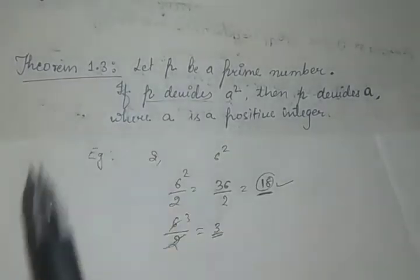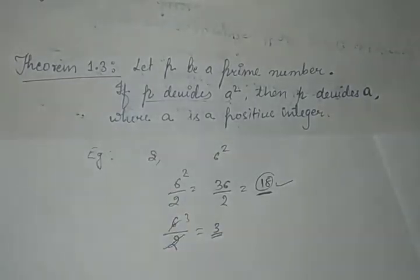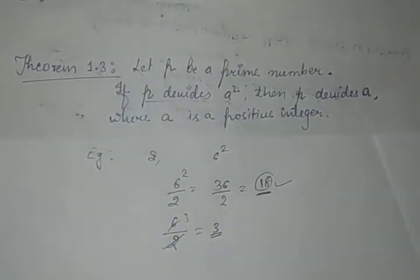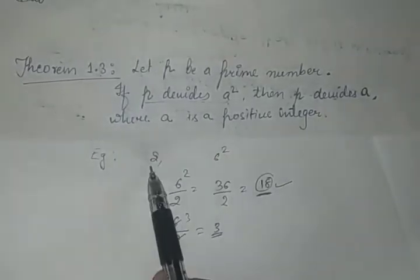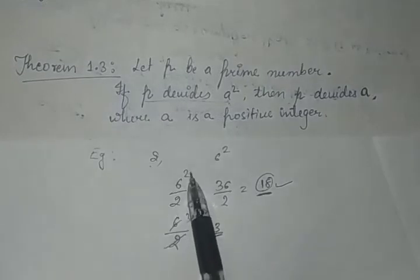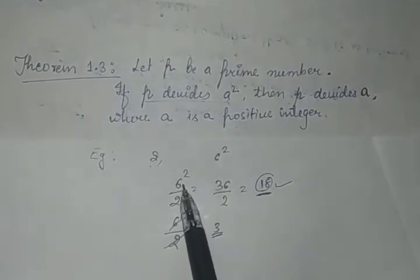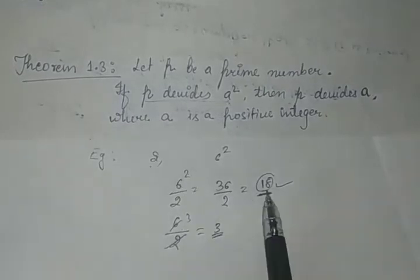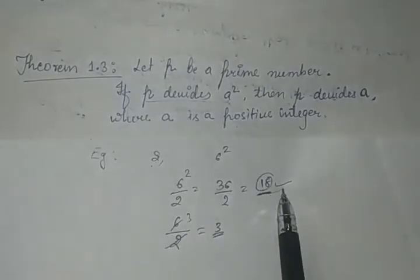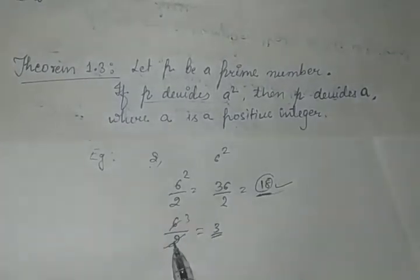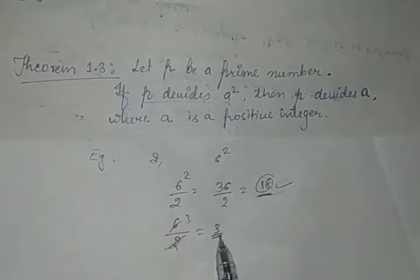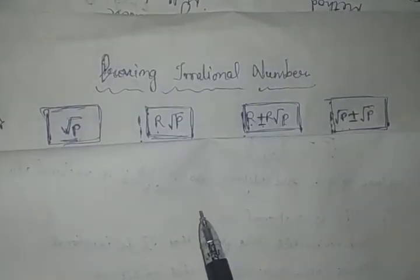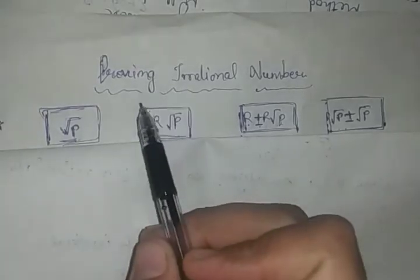Theorem 1.3 कहता है कि अगर कोई prime number दूसरे किसी भी number के square को पूरी तरह से divide कर दे, तो वही prime number उस number को भी divide करता है।